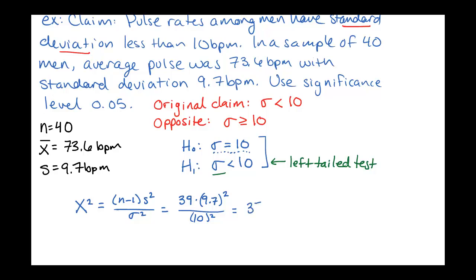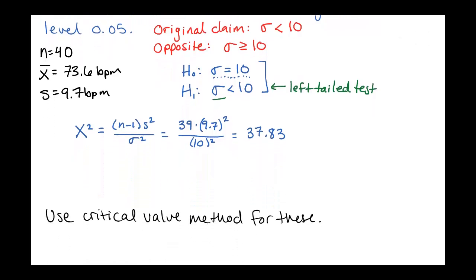And this computes to be 37.83. And while in theory you could use either the p-value method or the critical value method, we actually do not have a calculator program on the standard TI-83 or 84 for this. So just to make our calculations easier, we're going to opt for the critical value method on all of the standard deviation problems.